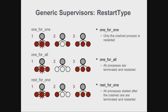Imagine a supervisor monitoring worker processes controlling instant messaging sessions of hundreds of thousands of users. If any one of these processes crashes, we lose the session for that particular user, but we don't want to affect all the other users running in the system. All other workers should continue running independently, possibly receiving a status down when a user disconnects, and then a status up when that session is restarted.